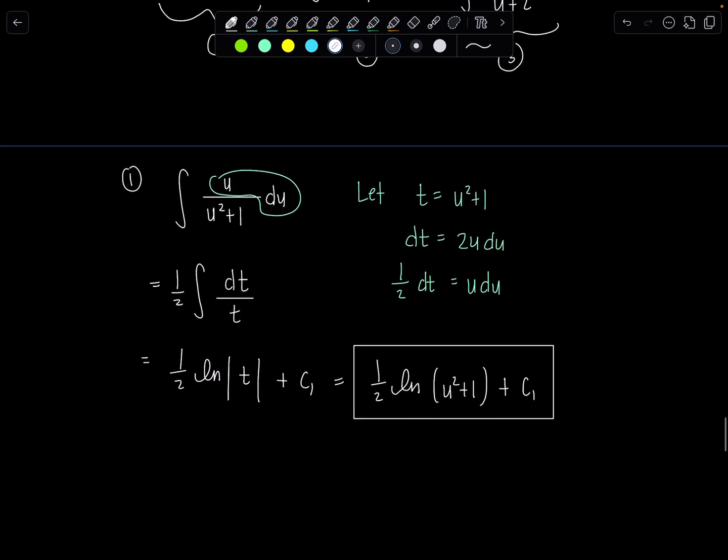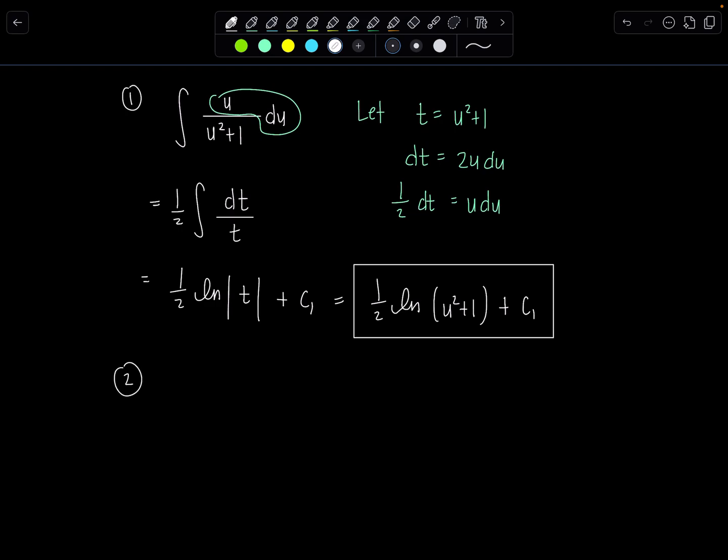Integral number 2 was 3 over u squared plus 1. I'll put the negative back in at the end. Don't worry. 3 over u squared plus 1 du. Hopefully you recognize antiderivative is just 3 tan inverse of u plus c2. Nothing wild going on there.